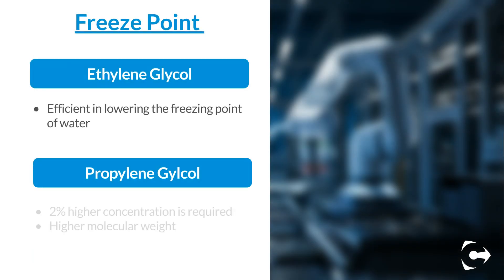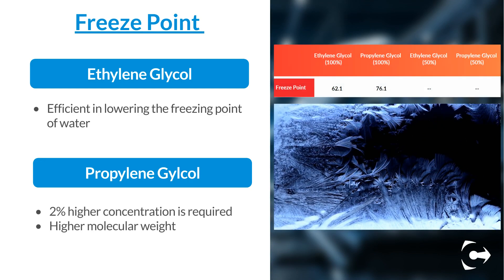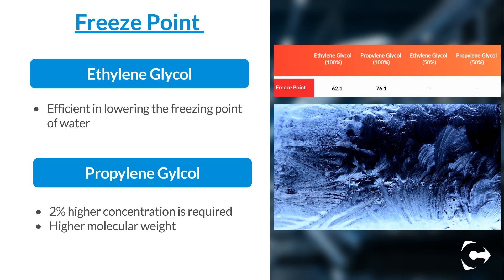As PG has a higher molecular weight than EG, it will take about 2% higher concentration of PG to give equivalent protection from freeze compared to an EG solution.